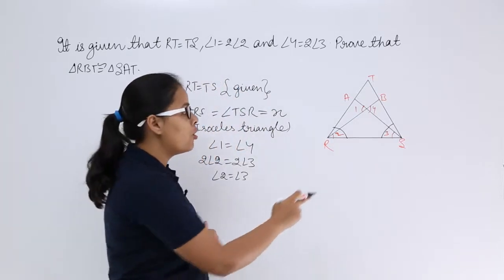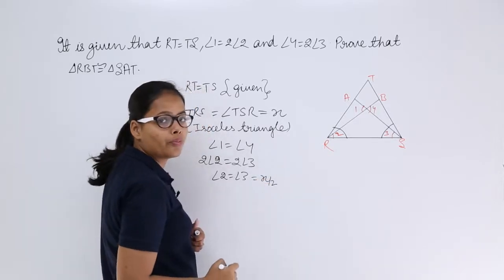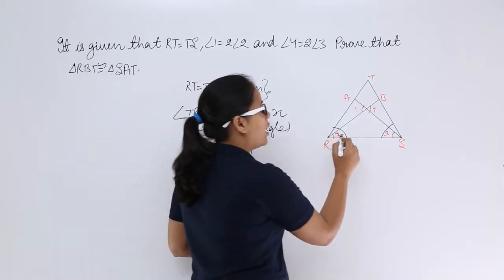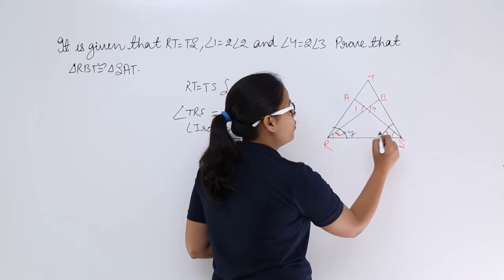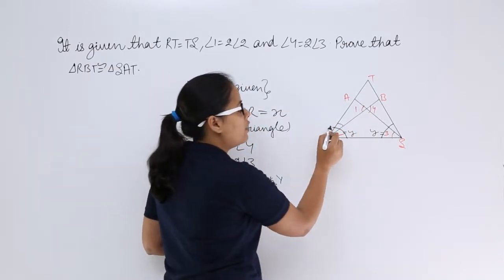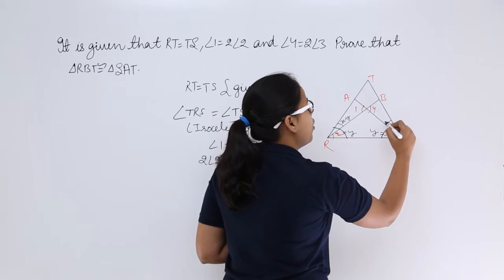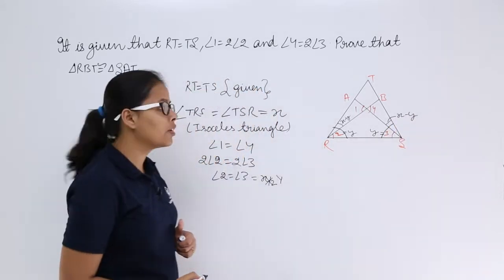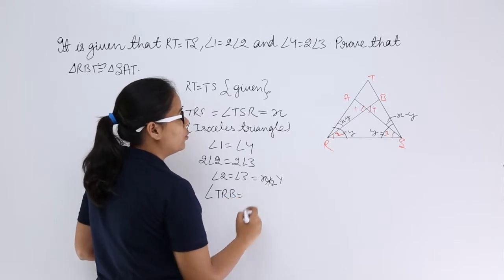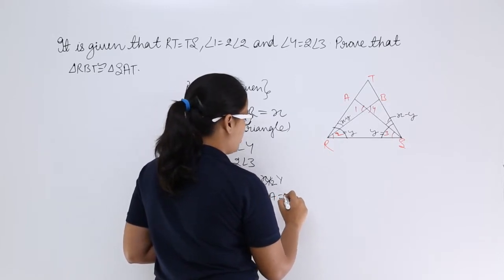So these two angles are equal. Let's suppose the value for both angle 2 and angle 3 is Y. You know that the whole angle at the vertex is X. So the remaining angle — which is angle TRB in one triangle and angle TSA in the other — will each be X minus Y. So you can write that angle TRB is equal to angle TSA, both equal to X minus Y.